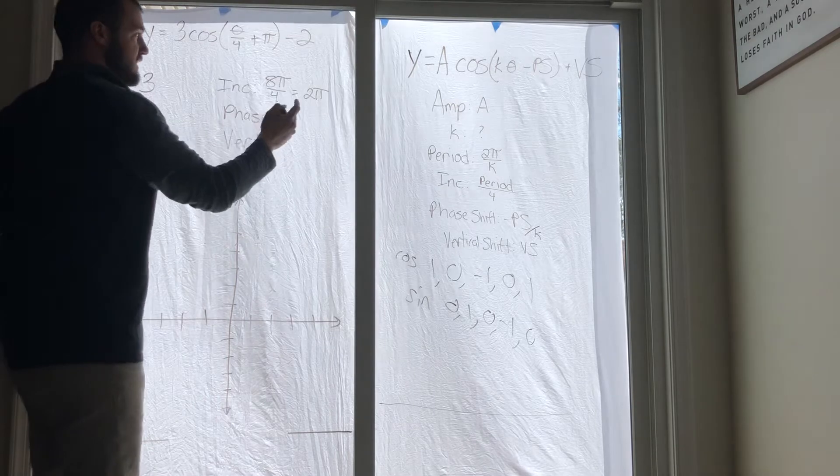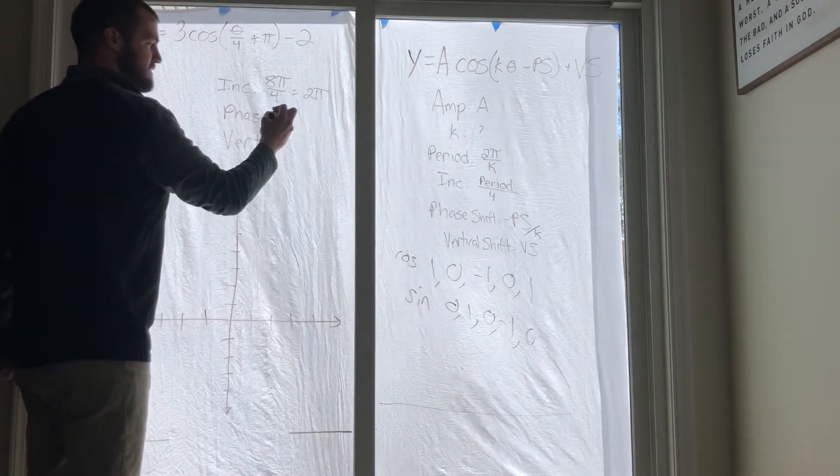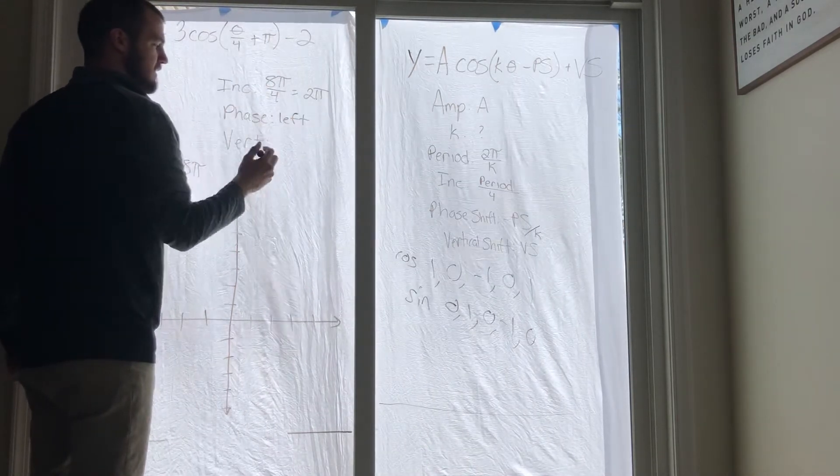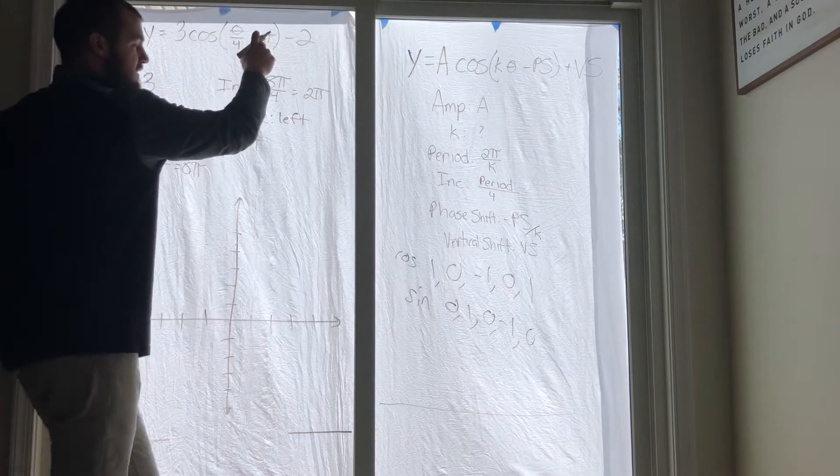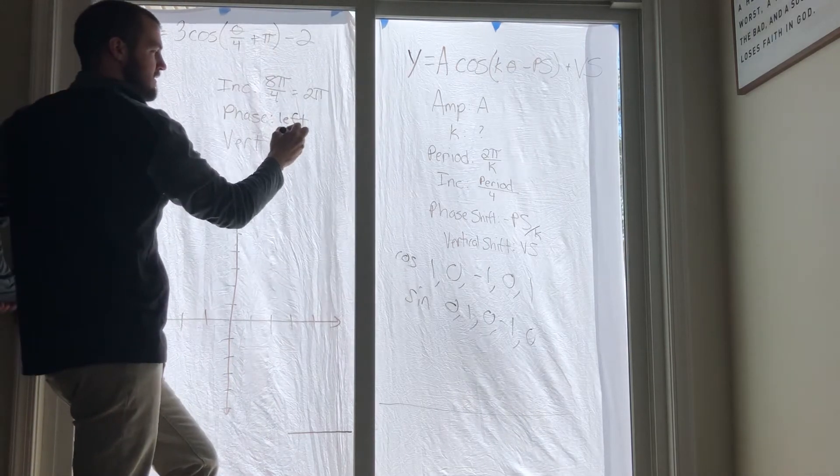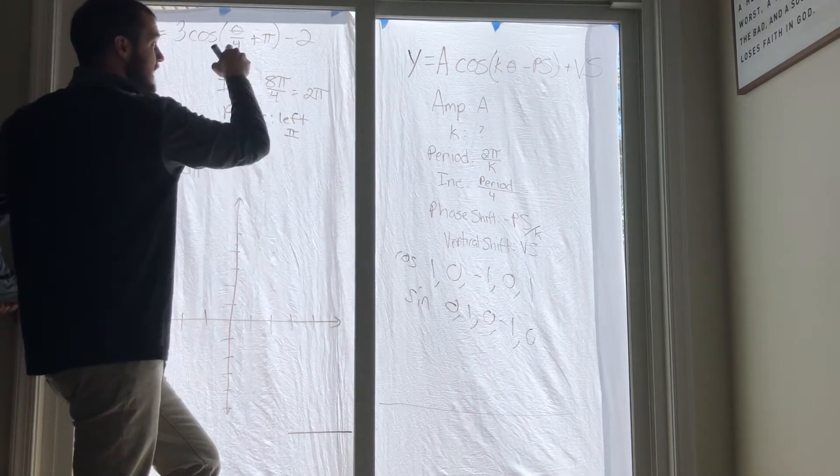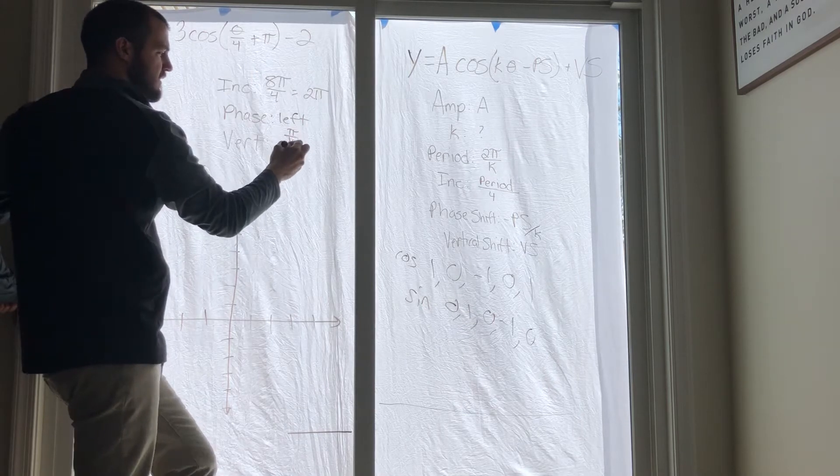Alright, your phase shift: we're definitely moving left because it's positive. Then you're going to take that π and divide it by the 1/4. Again, the same thing as before - multiply by the reciprocal, which gives you 4π.